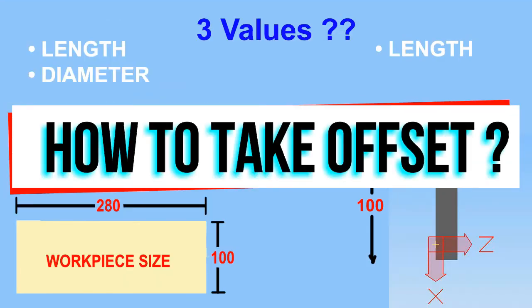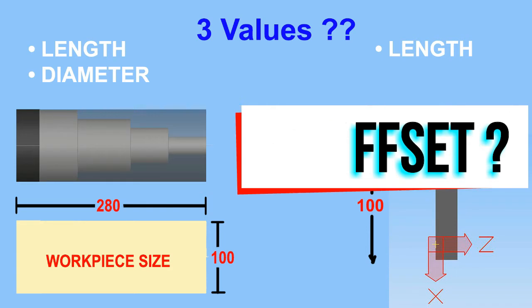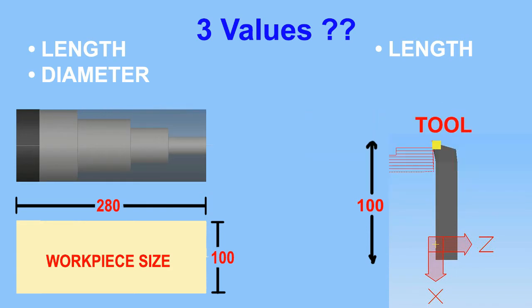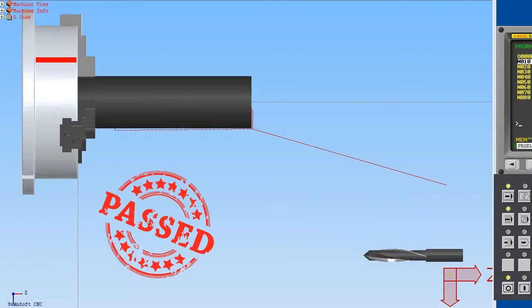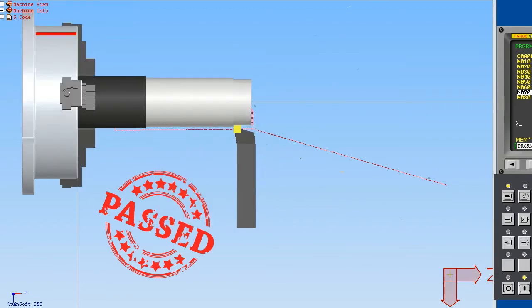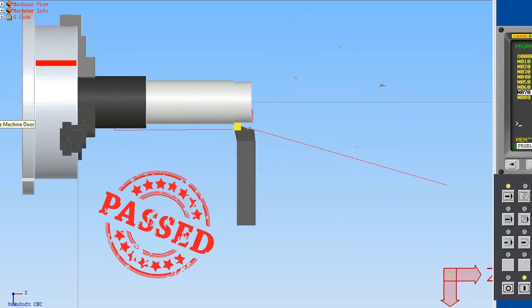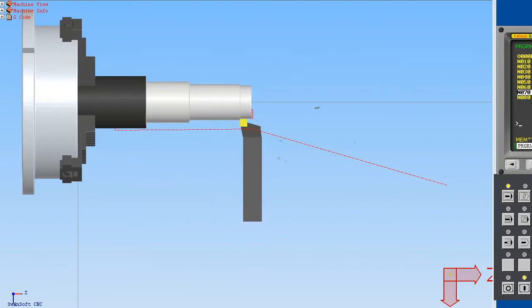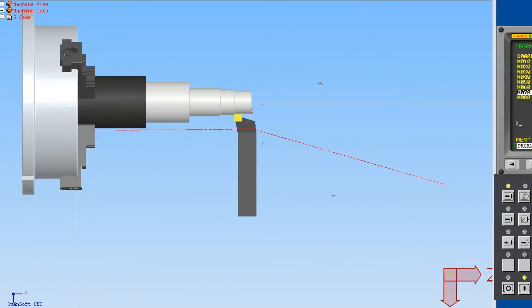Every tool has a different length and nose radius. Workpiece diameter and length also change. So for that, we have to take geometric offset for a particular combination, as you can see on the screen.